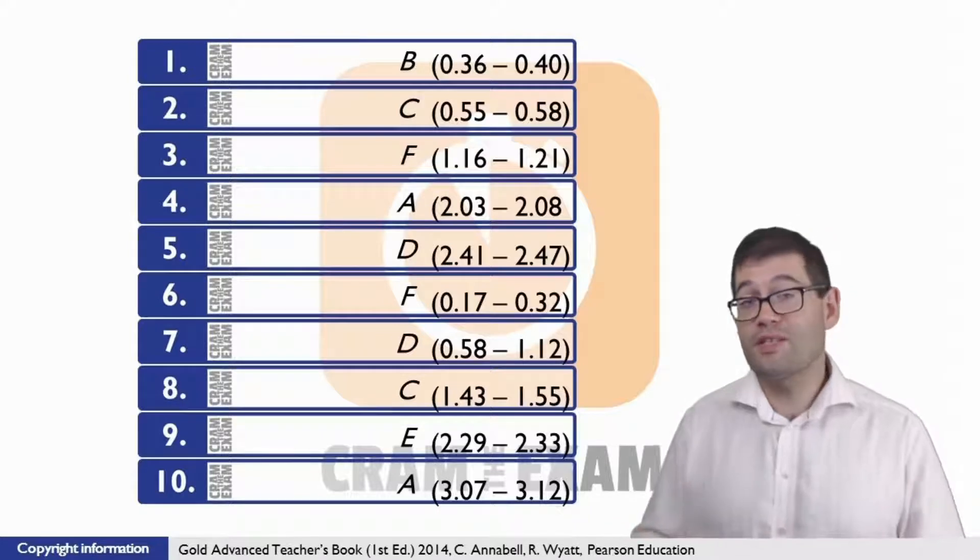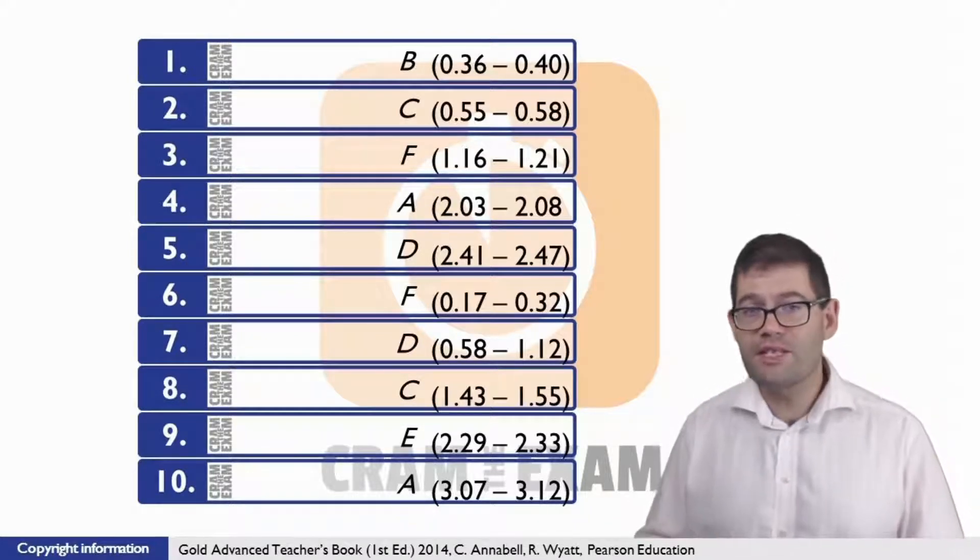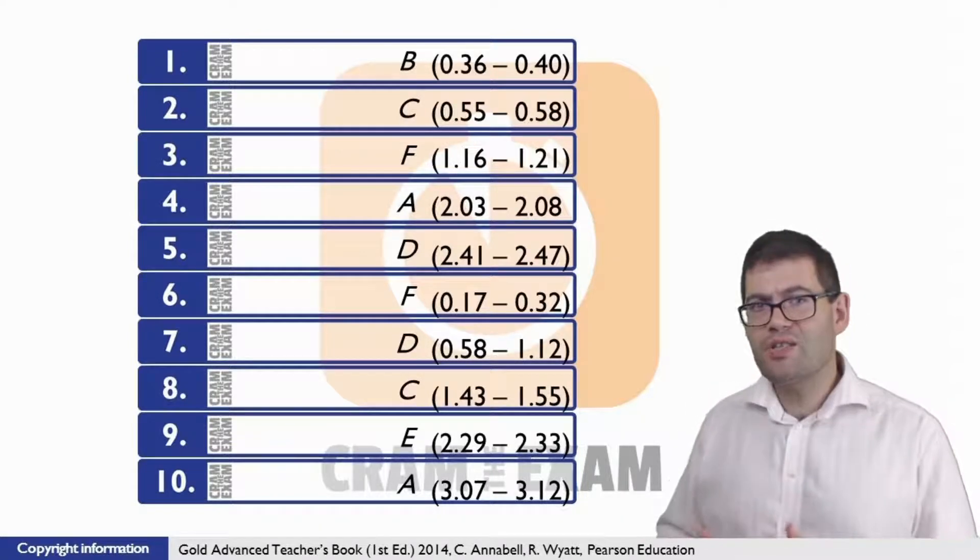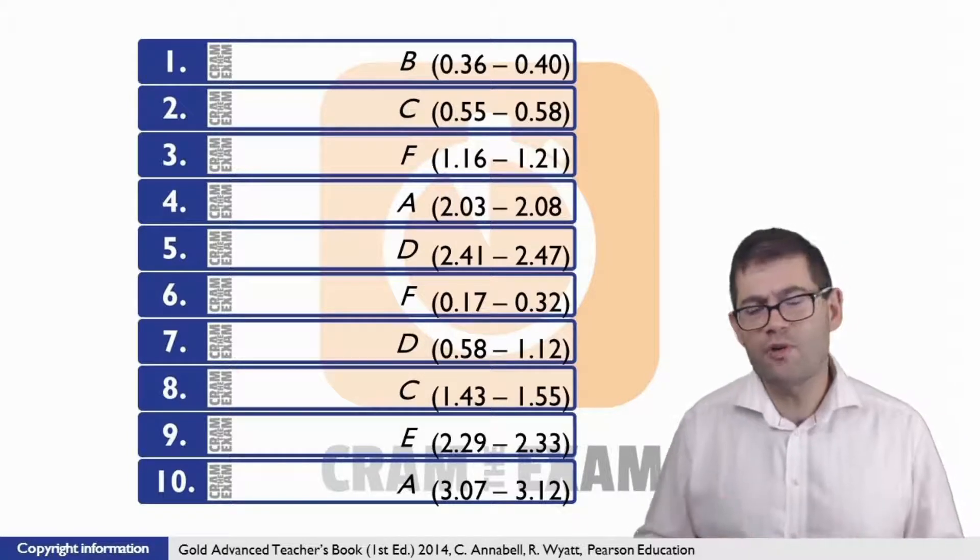For question six, the answer is F, concerned because they revealed a mismatch, because speaker one says 'Well, there was a huge discrepancy between my results and Charlie's. Some of his answers really had me worried.'